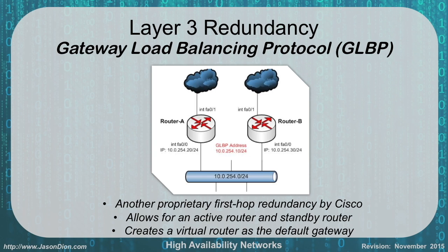GLBP, the Gateway Load Balancing Protocol, is another first-hop redundancy protocol developed by Cisco, so it is proprietary. It allows for active-standby and creates a virtual router as the default. It is usually used as your first hop, similar to HSRP, and is another Cisco-based way of achieving gateway redundancy.